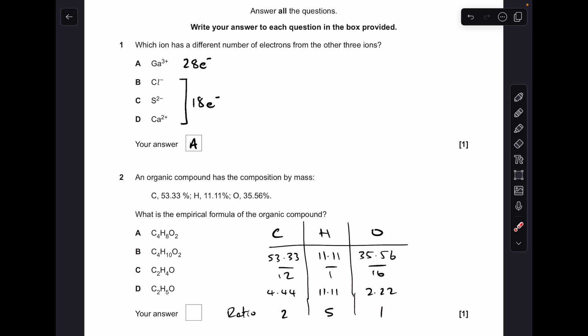Number 2, just a standard empirical formula calculation, so we put the percentages in, divide by the MR, that gives us the moles. Divide by the smallest gives us the ratio, and that's coming out at 2 to 5 to 1, so the answer was D.